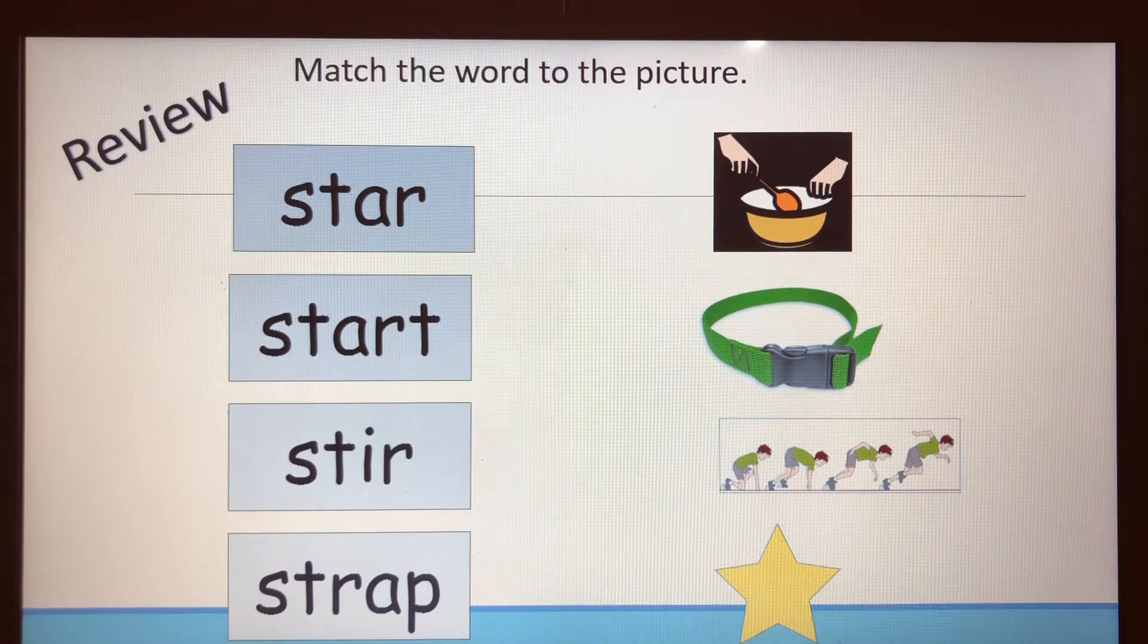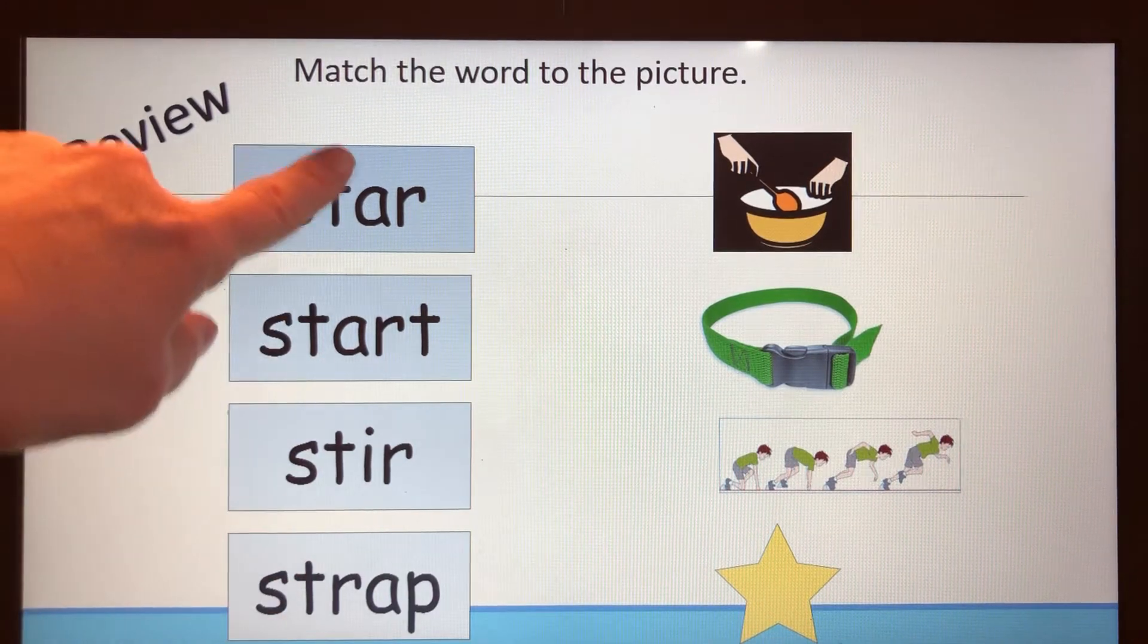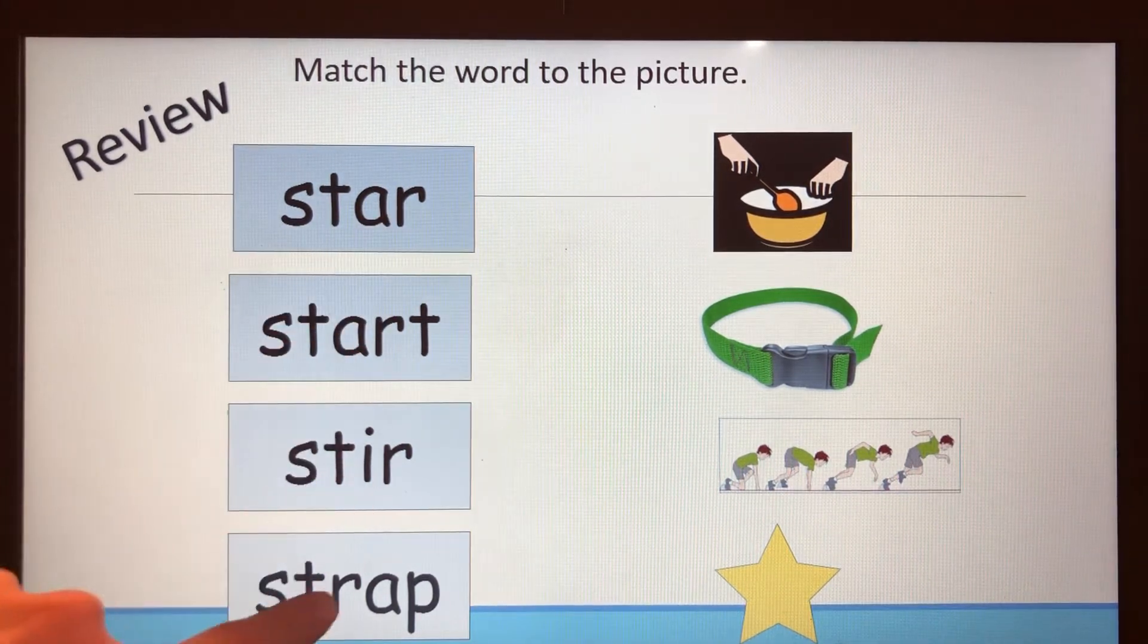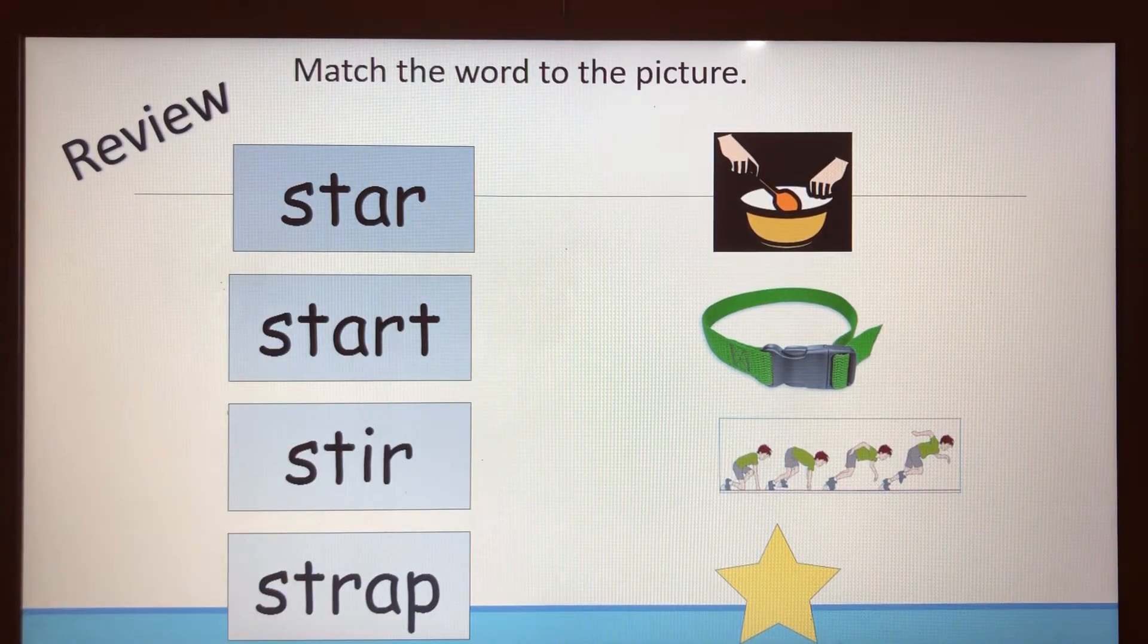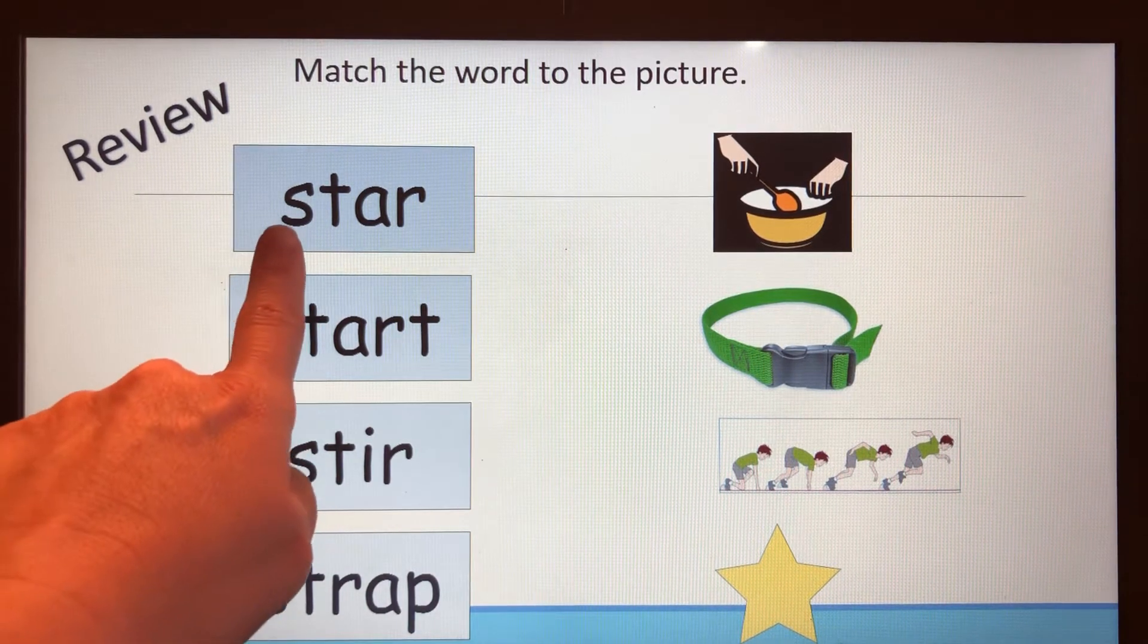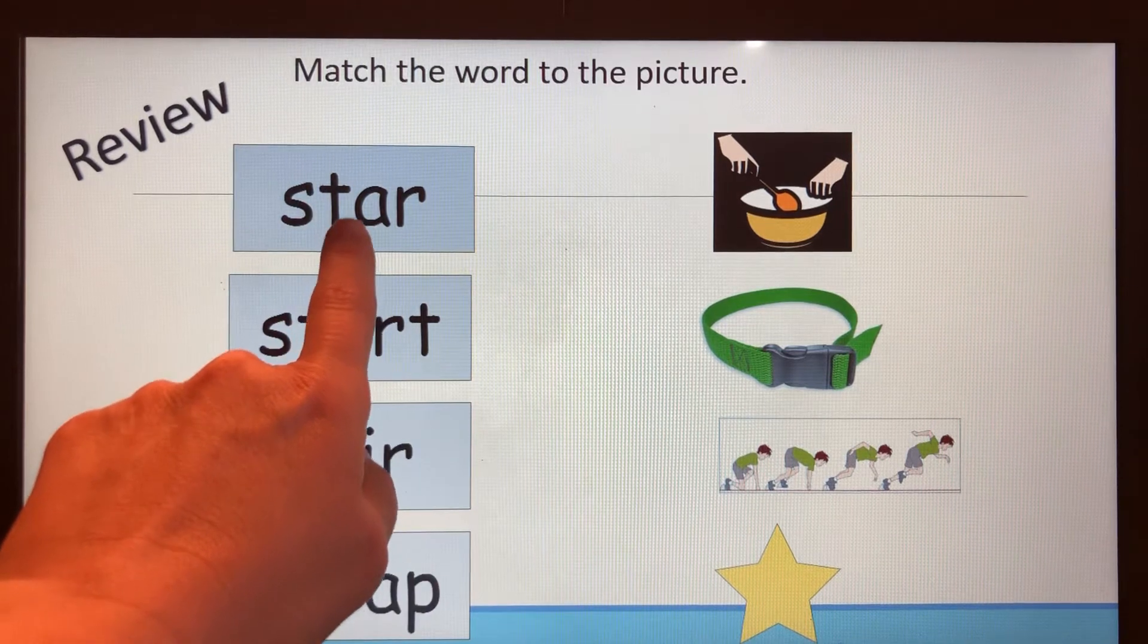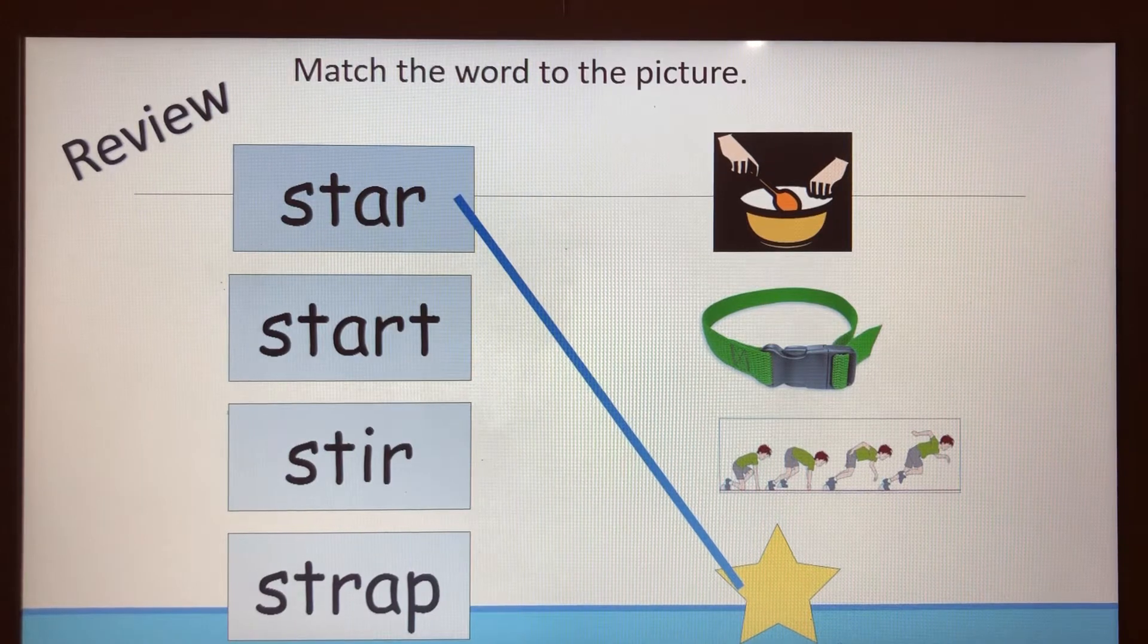These words are very similar. I see a lot of the same letters. Most of the words—all of the words—have ST to start, and I see the letter R in all of the words, and several of the words have the letter A. We'll have to read these words carefully to match them correctly. Let's begin right here. What word do you think this is? I bet you're right: star. You see the ST and you see the AR making the R sound. Good reading.